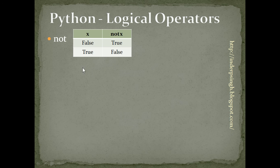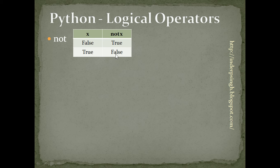The first one is NOT. As we know, there are two Boolean values, true and false. NOT results in the other Boolean value. So if x is false, NOT x is true. If x is true, NOT x is false.